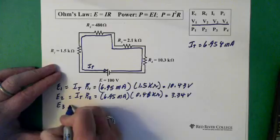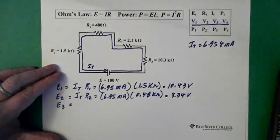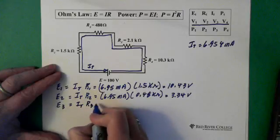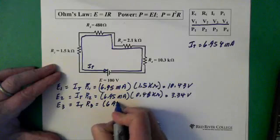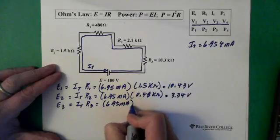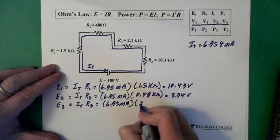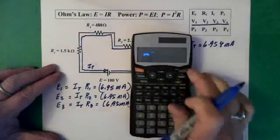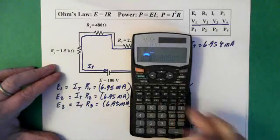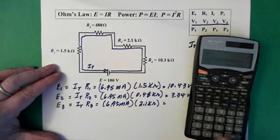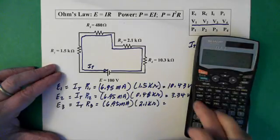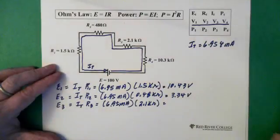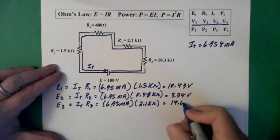E3 equals I total times R3. Again same current, 6.95 milliamps, and the resistor is 2.1 kilohms. Grab our current from memory, multiply it by 2.1 exponent 3 equals 14.60 volts.